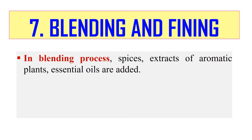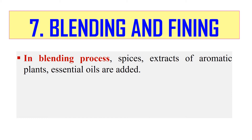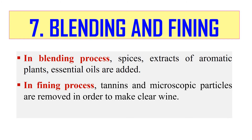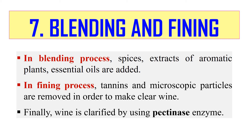Finally, blending and fining. In the blending process, spices, extracts of aromatic plants, essential oils, or fruit juices are added in appropriate proportions for flavor and aroma. In the fining process, tannins and microscopic particles are removed to make the wine clear. For this purpose, the wine is treated with gelatin, potassium caseinate, egg albumin, or lysozymes; sometimes skim milk is also used. It can also be filtered through a membrane filter or diatomaceous earth. Finally, the wine is clarified to remove pectin using the enzyme pectinase.